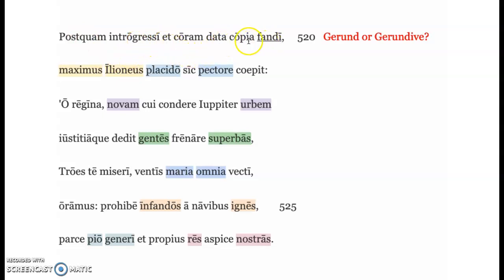Very great Ilioneas thus began with a calm heart: O queen, to whom Jupiter has given the right to establish a new city and to check the proud nations with justice.